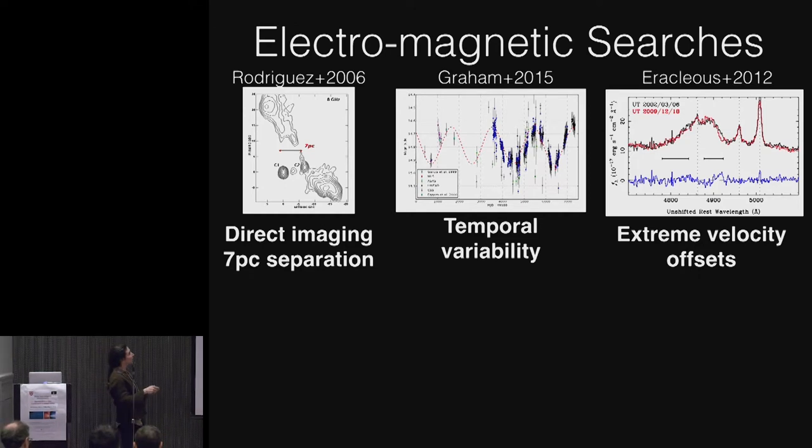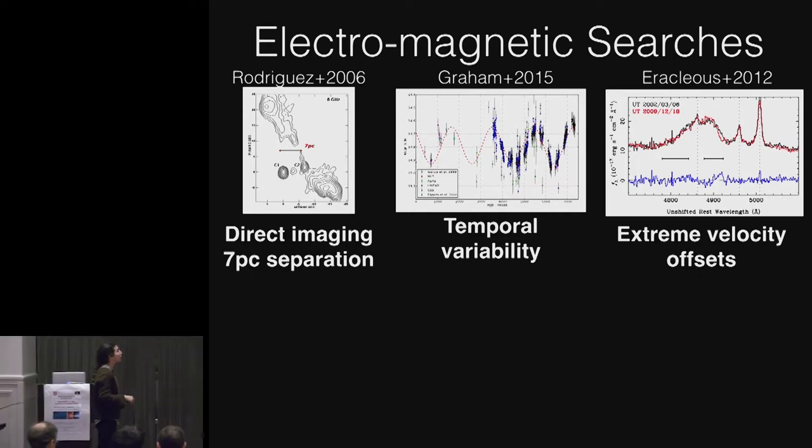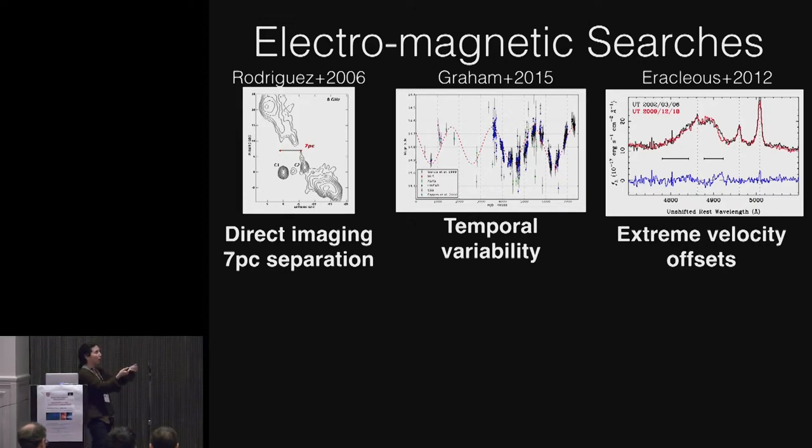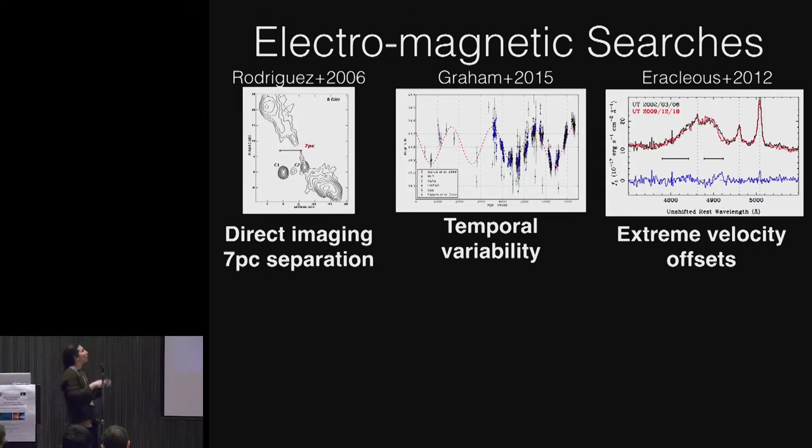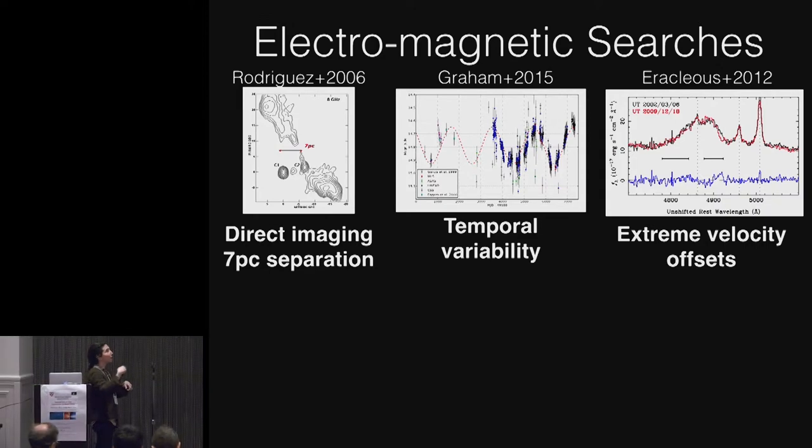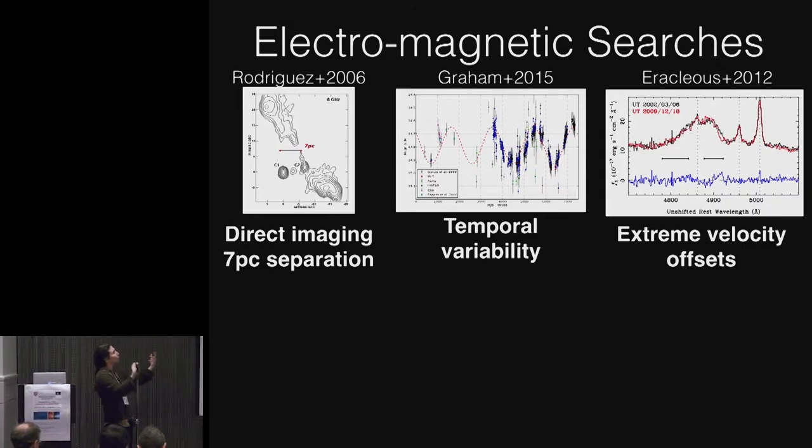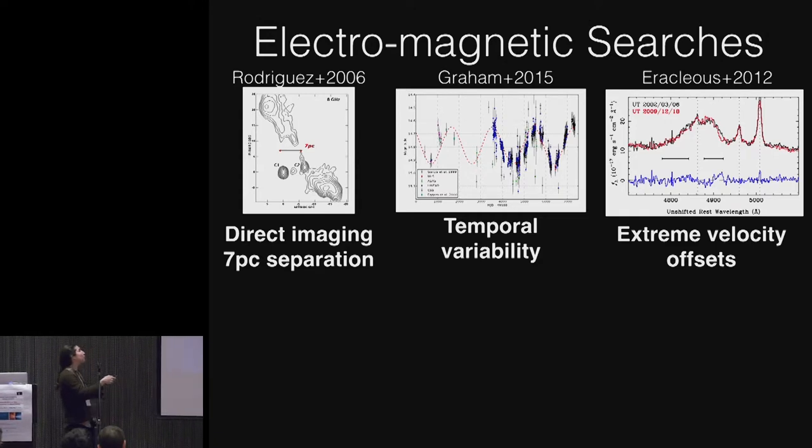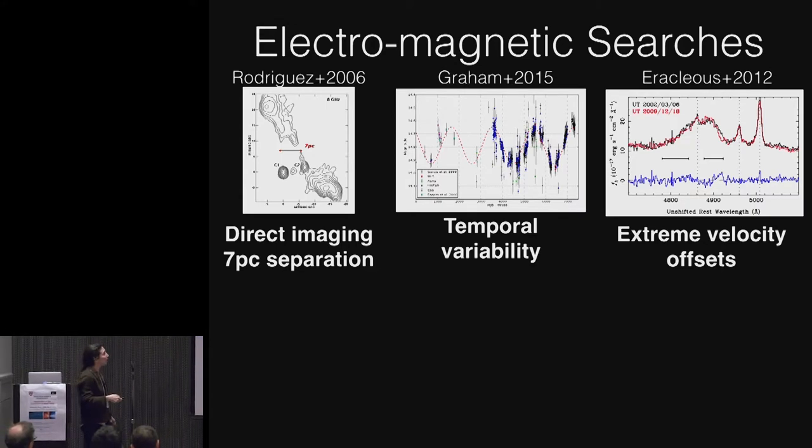But we can do the standard trick in astronomy of substituting spatial resolution for temporal resolution and look for periodic variability that you might expect if you have a pair of black holes in an accretion disk. If the secondary may kick the accretion, the outer accretion disk as it goes around. And so you might expect to see temporal variability.